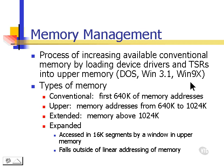All of these operating systems fall into the same memory model. They have conventional memory, which is the first 640K of memory addresses, or 640,000 memory addresses. Then upper memory, which are the memory addresses from 640K to 1024K. And then extended memory, which is any memory above 1024K.